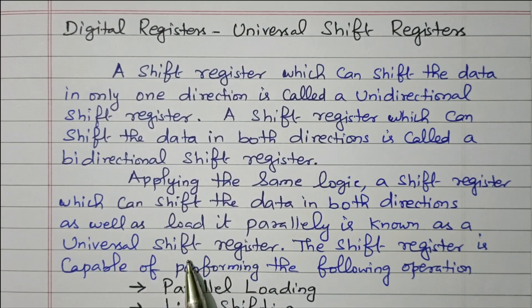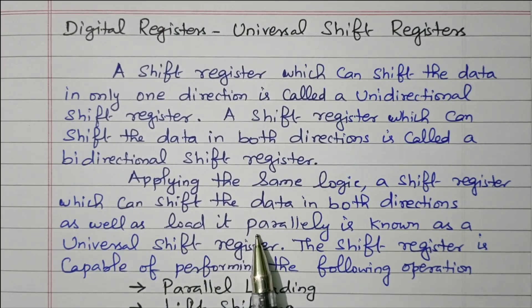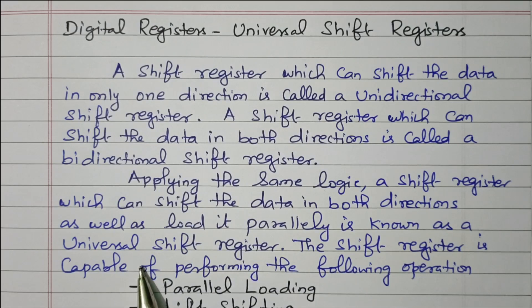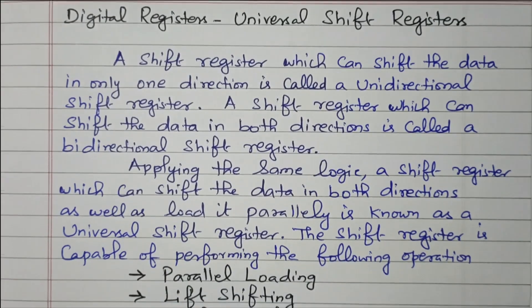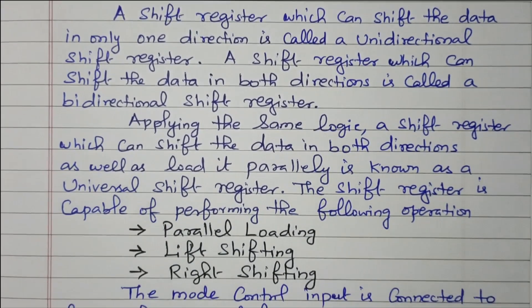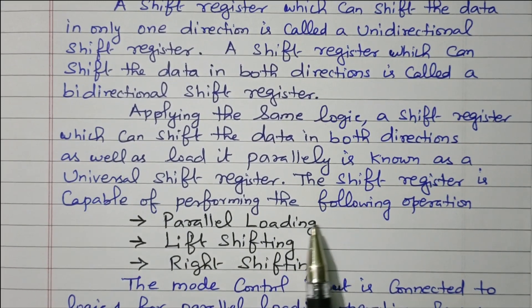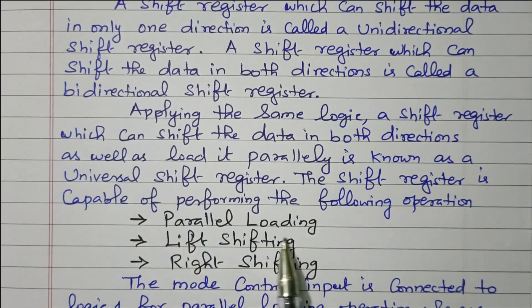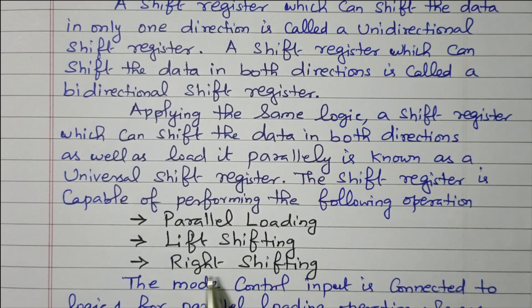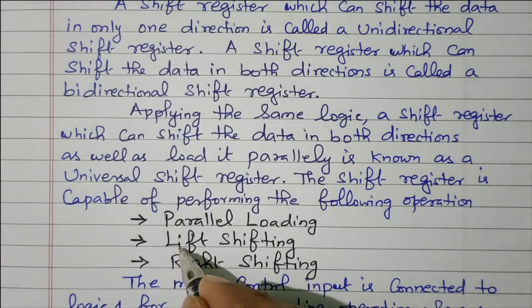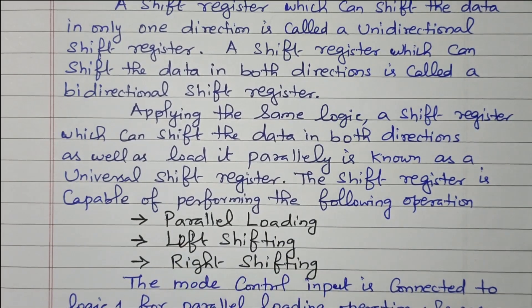Universal means both directions as well as parallel loading. These three operations are performed, so it is called a universal shift register. The shift register is capable of performing the following operations: parallel loading, left shifting, and right shifting.